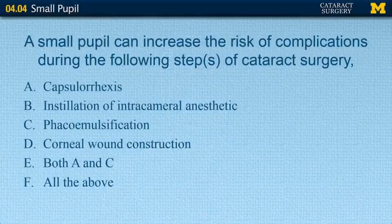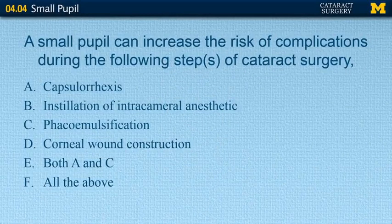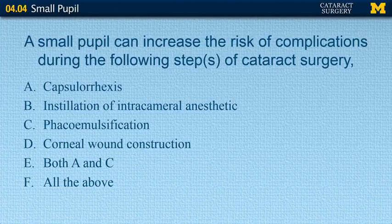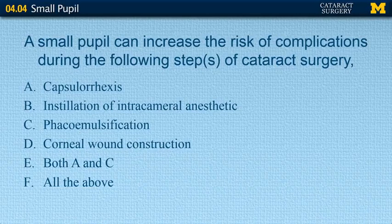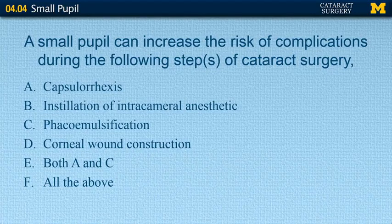Post-test, question one: a small pupil can increase the risk of complications during the following steps of cataract surgery. A, capsulorhexis; B, installation of intracameral anesthetic; C, phacoemulsification; D, corneal wound construction; E, both A and C; F, all the above. The correct answer is E — both capsulorhexis and phacoemulsification. Other affected stages include hydrodissection and inserting the lens.